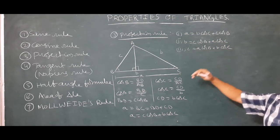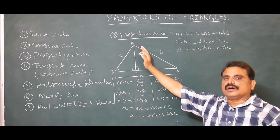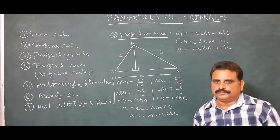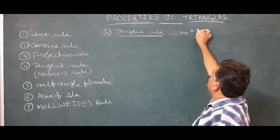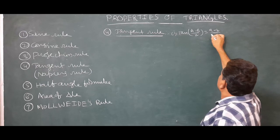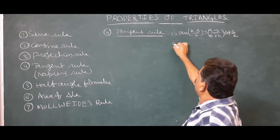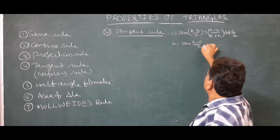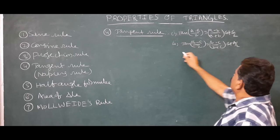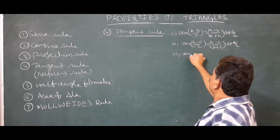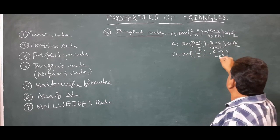Similarly the other two forms can be proved. This holds for acute, right-angled, and obtuse triangles. Now the tangent rule (Napier's rule): tan((A−B)/2) = ((a−b)/(a+b)) · cot(C/2); tan((B−C)/2) = ((b−c)/(b+c)) · cot(A/2); tan((C−A)/2) = ((c−a)/(c+a)) · cot(B/2).